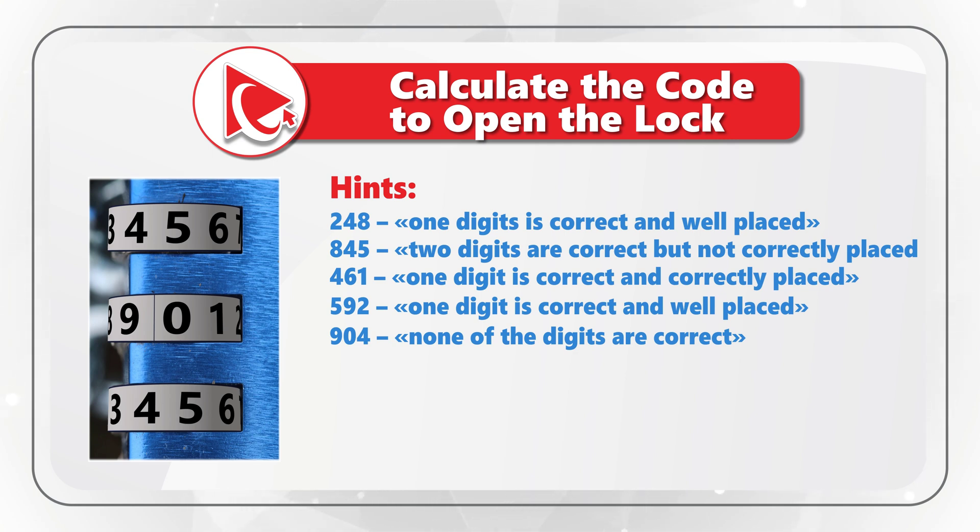And last but not least, hint that in the digits 904, none of the digits are correct. To open the lock, you need to process all the hints and select one out of four possible choices. And last but not least, choice D, 568. Take a close look to see if you can come up with the answer.